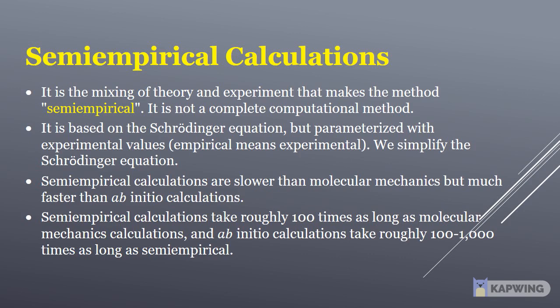We simplify the Schrödinger equation in these calculations. Semi-empirical calculations are slower than molecular mechanics but much faster than Ab initio calculations. Semi-empirical calculations take roughly 100 times as long as molecular mechanics calculations, and Ab initio calculations take roughly 100 to 1000 times as long as semi-empirical.